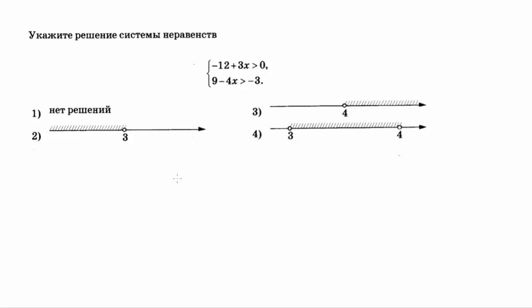3 — от 4 до плюс бесконечности (4 не входит), и 4 — от 3 до 4, при этом числа 3 и 4 не входят. Давайте попробуем данную систему решить. Перепишем: минус 12 плюс 3x больше 0.